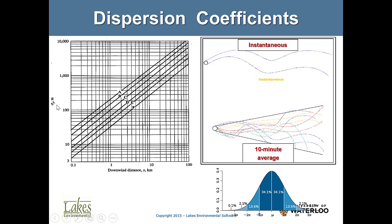Here is sigma_y. For example, at 1 kilometer and stability class A, sigma_y is about 110 meters. Here is a plume in plan view — looking from the top — showing how the plume behaves. This is an instantaneous plume, and this could be for a vehicle as well. If a vehicle is stopped at a stoplight with wind blowing left to right, the plume will not travel straight — it will meander and oscillate.